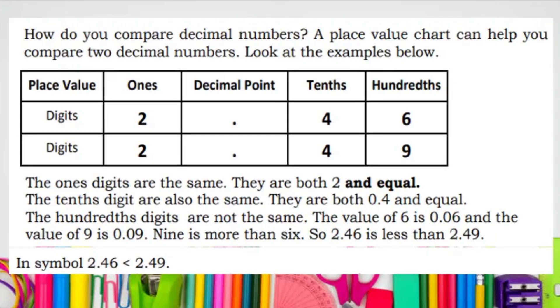This time, let's try to compare numbers. How do you compare decimal numbers? A place value chart can help you compare two decimal numbers. We will compare 2.46 and 2.49. If we are going to plot the decimal numbers in a place value chart, then we can compare them easily.